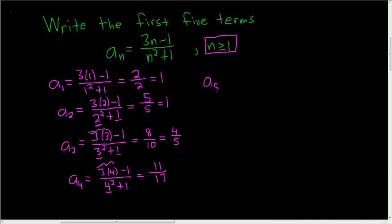And the last one is a sub 5, because it wanted the first 5 terms. So 3 times 5 minus 1 divided by 5 squared plus 1.